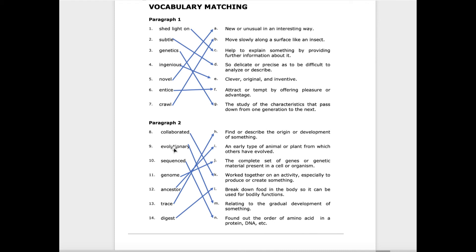Evolutionary is M: relating to the gradual development of something. Sequenced is N: found out the order of amino acid in a protein, DNA, etc. Genome is J: the complete set of genes or genetic material present in a cell or organism.